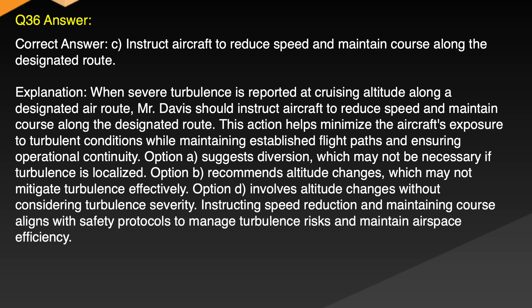Explanation: When severe turbulence is reported at cruising altitude along a designated air route, Mr. Davis should instruct aircraft to reduce speed and maintain course along the designated route. This action helps minimize the aircraft's exposure to turbulent conditions while maintaining established flight paths and ensuring operational continuity. Option A suggests diversion which may not be necessary if turbulence is localized. Option B recommends altitude changes which may not mitigate turbulence effectively. Option D involves altitude changes without considering turbulence severity. Instructing speed reduction and maintaining course aligns with safety protocols to manage turbulence risks and maintain airspace efficiency.